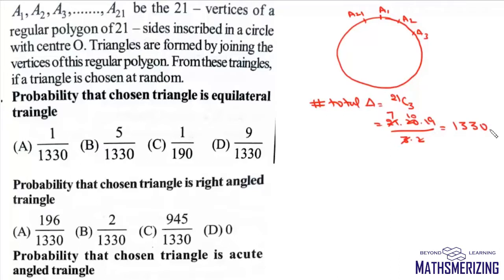Now we need to find the probability that the chosen triangle is an equilateral triangle. It will be an equilateral triangle if number of vertices between the three chosen vertices is the same. So that means in that case x1 must be equal to x2 and it must be equal to x3.